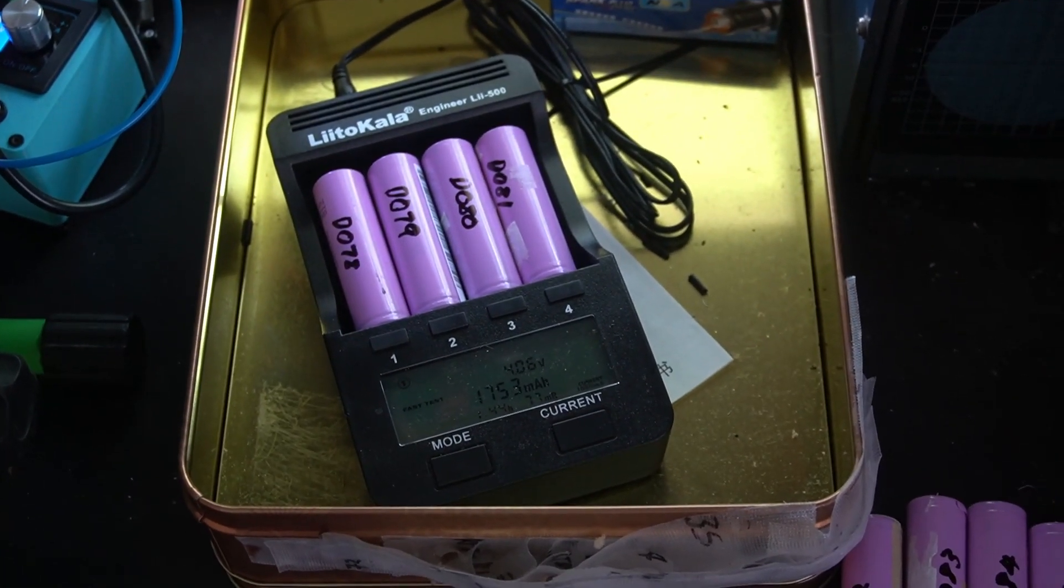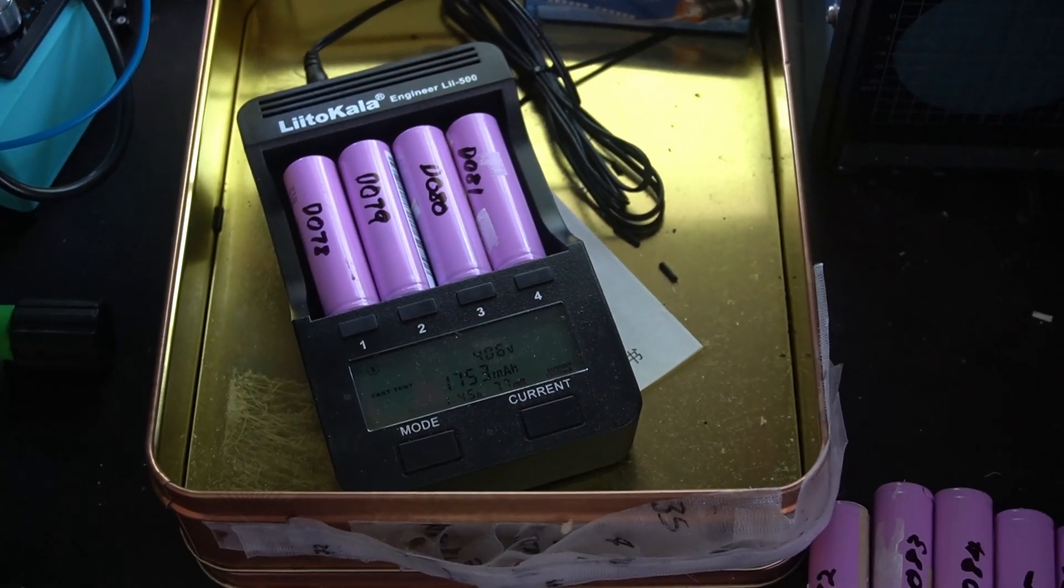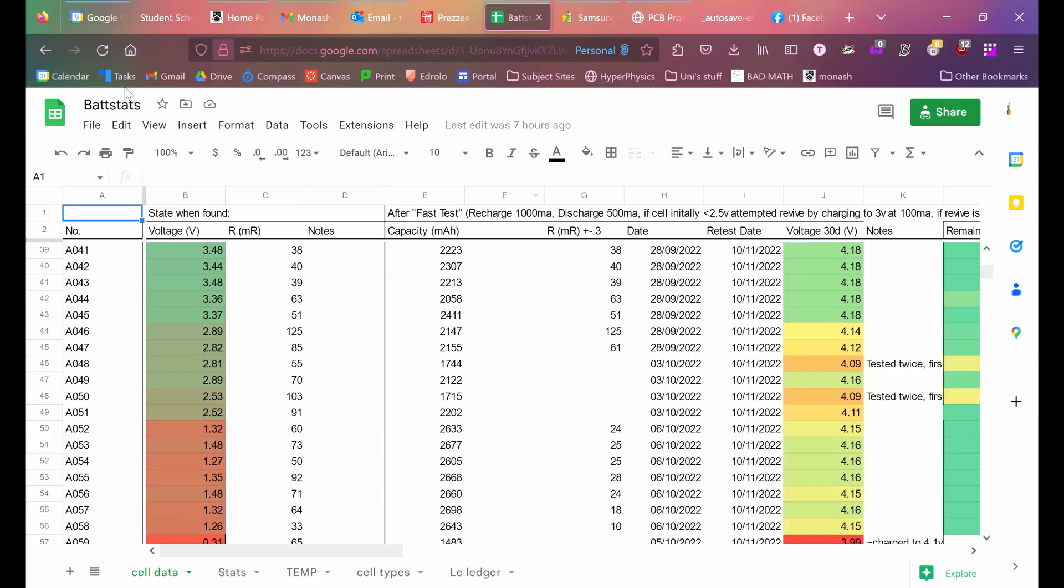These cells are tested for capacity and then I wait for 30 days to check that they're not leaking. In total I've tested around 300 cells.